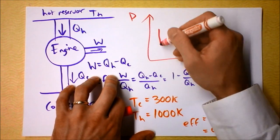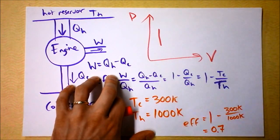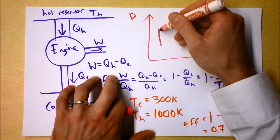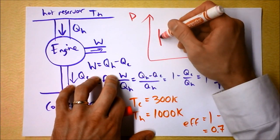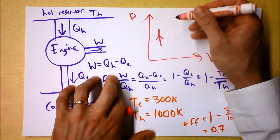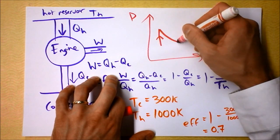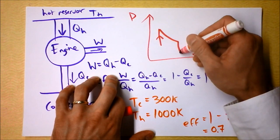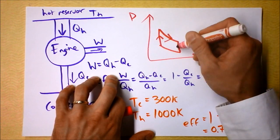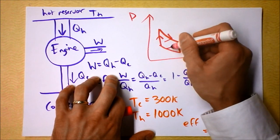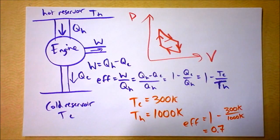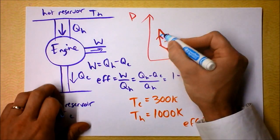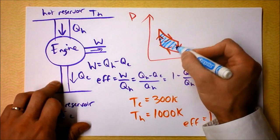Ultimately, you've got to be doing something in a PV diagram to get the engine to do work. You need to be going clockwise in order to do positive work. You could do an adiabat, then an isotherm, then another adiabat, and then another isotherm — and you'd find that it's doing some positive work equal to the area inside that cycle. We're bringing it all together right now.